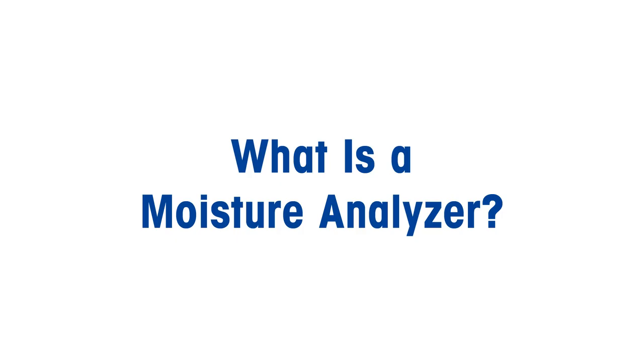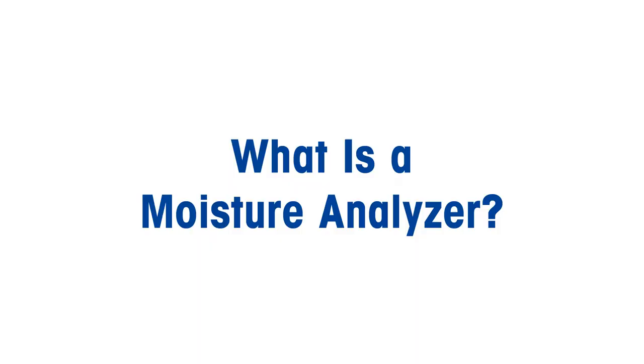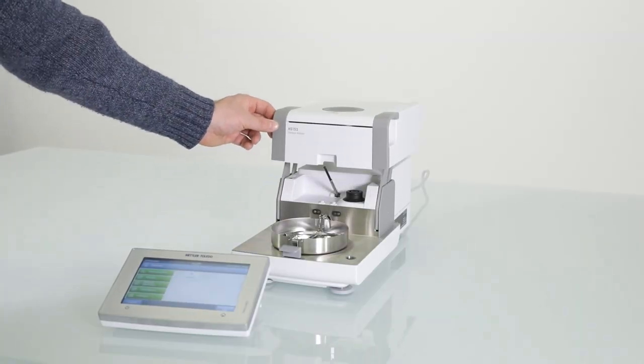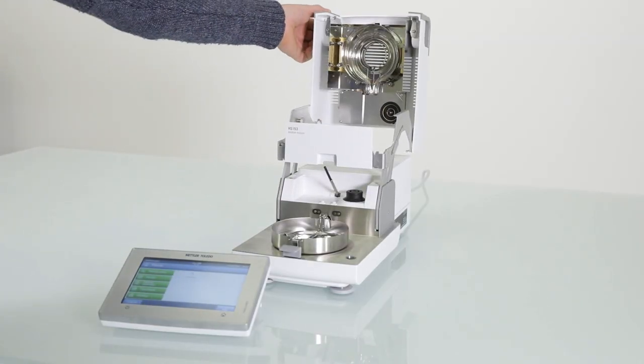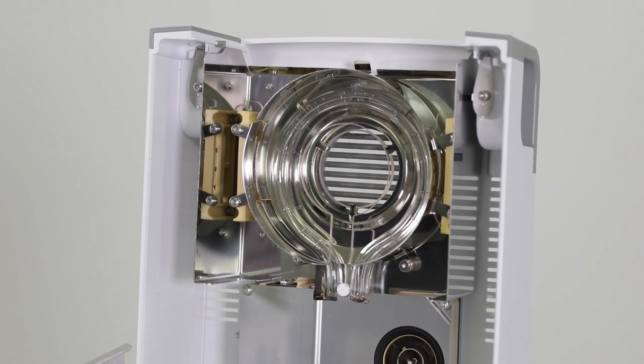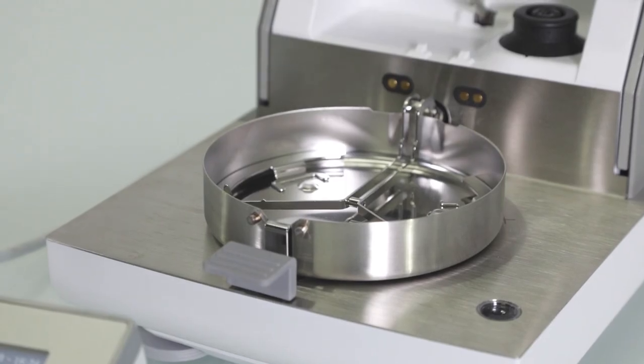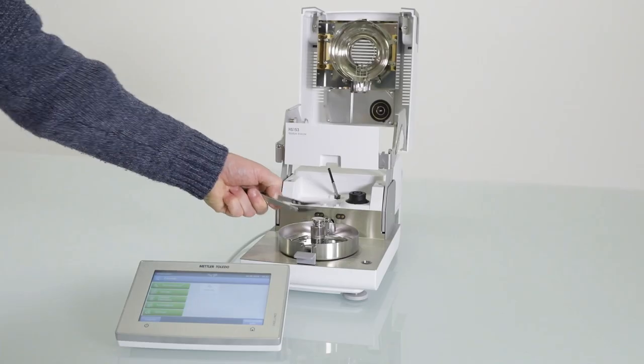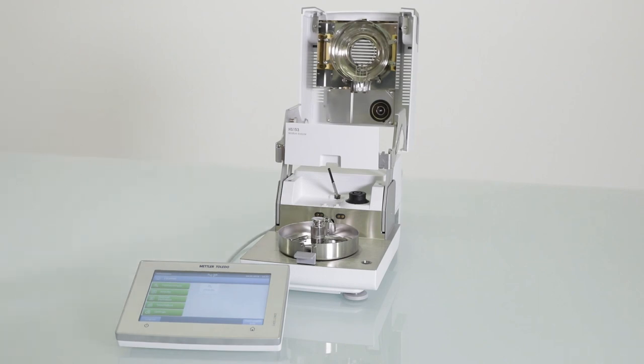Now that we have a common understanding of what moisture content and weight loss on drying is, let's see how Mettler Toledo Moisture Analyzers can assist you in easily performing this measurement. A moisture analyzer consists of a heating unit — in this case a halogen bulb — and a weighing unit, in this case a high-performance MFR load cell with hanging weighing pan.